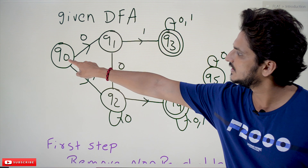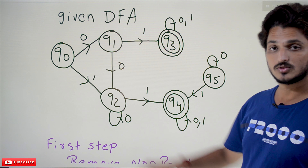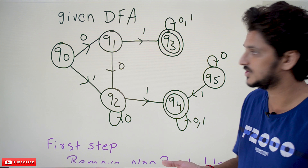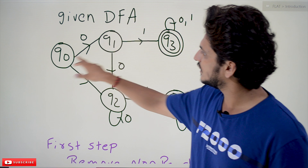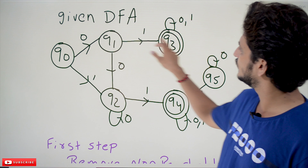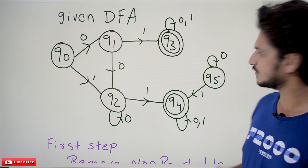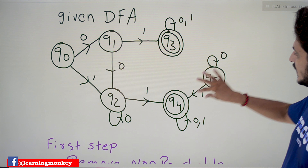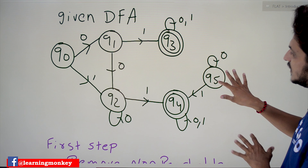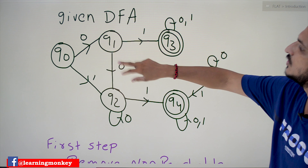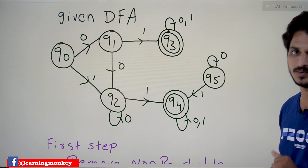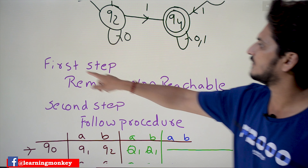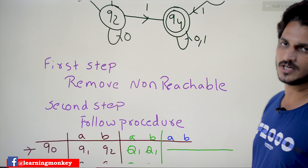In this DFA, the initial state is Q0. The first step is we have to remove the states that are not reachable from the initial state. From Q0 we can reach Q1, we can reach Q2. From Q1 we can reach Q3. Q2 we can reach Q4. But Q5 is not reachable from the initial state, so we eliminate this state. After eliminating Q5, we are left with Q0, Q1, Q2, Q3, and Q4.